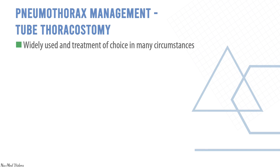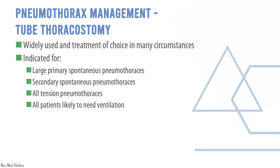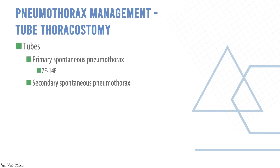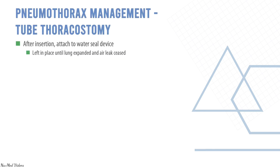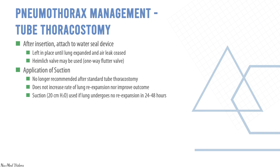Tube thoracostomy is widely used as treatment of choice in many circumstances. It is indicated for large primary spontaneous pneumothoraces, secondary spontaneous pneumothoraces, all tension pneumothoraces, and all patients likely to need ventilation. Tube sizes: 7–14 Fr for primary spontaneous, 20–28 Fr for secondary, and greater than 28 Fr if there is pleural fluid or need for mechanical ventilation. After insertion, attach to water seal device and leave in place until lung is expanded and air leak has ceased. Application of suction after standard tube thoracostomy is no longer recommended — it does not increase rate of lung re-expansion or improve outcomes. Suction of -20 cmH₂O water may be used if there is no re-expansion after 24–48 hours.